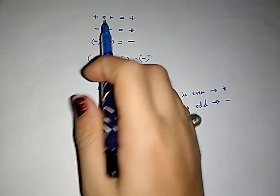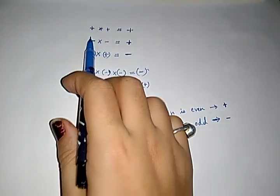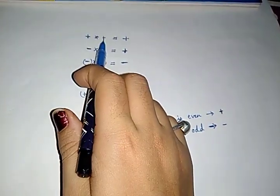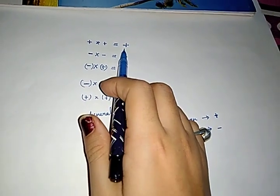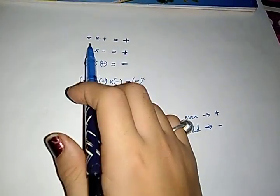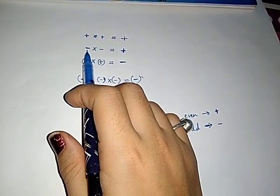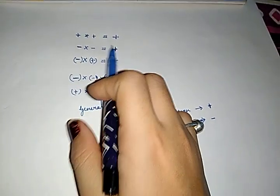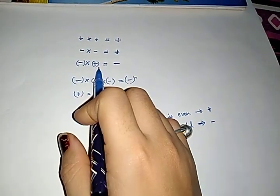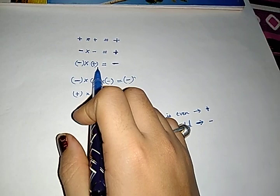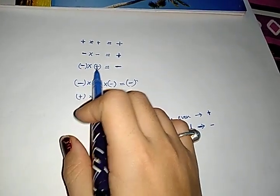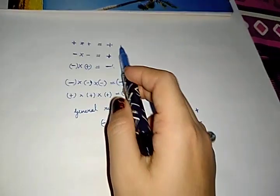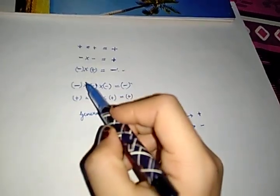If 2 integers are there and both are positive, then your answer will come in positive. If 2 integers are there and both are negative, then your answer will also be in positive. But if one is negative and the other is positive — meaning both have different signs — then your answer will come with a negative sign. This was for 2 integers.